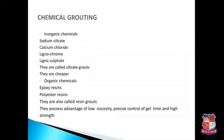Inorganic chemicals used for chemical grouting include sodium silicate and calcium chloride, lignochrome, and lignosulphate — these are called silicate grouts and are cheaper. Organic chemicals such as epoxy resin and polyester resin are called resin grouts, and they possess the advantages of low viscosity, precise control of gel time, and high strength.